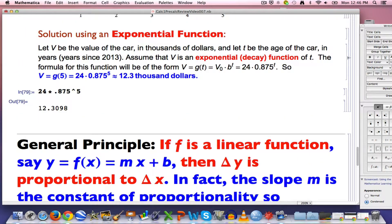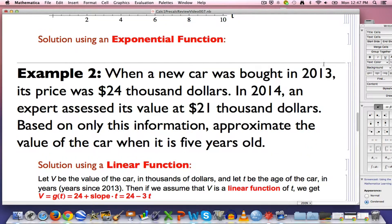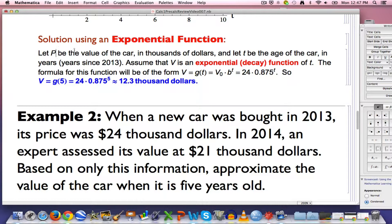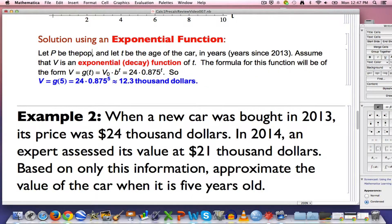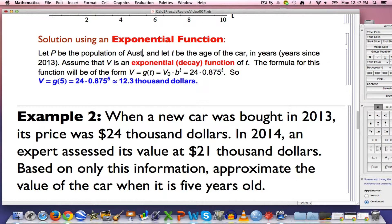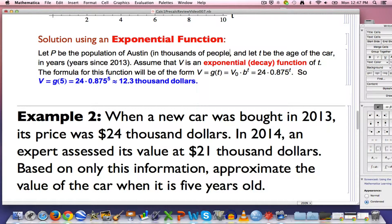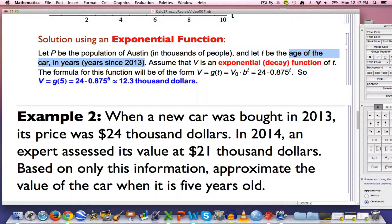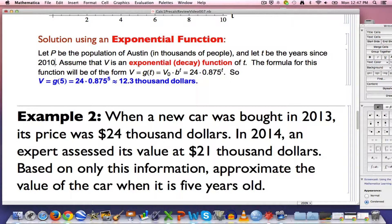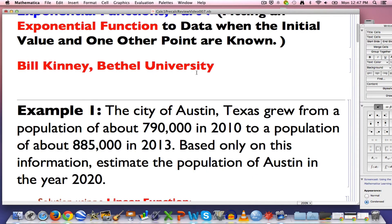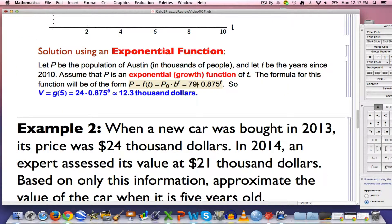Let's finish the video by assuming we're using an exponential function for that situation. This is going to be an exponential growth function. P is going to be the population of Austin in thousands of people, and T is the years since 2010. We're going to assume P is an exponential growth function of T. The initial number that you put out in front is the initial population, which we know was 790,000. So this will be 790 here. Now the b is going to be bigger than 1.